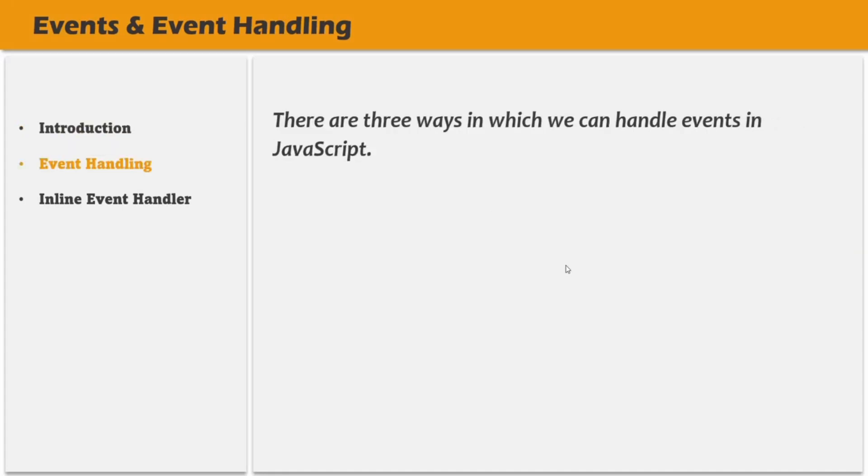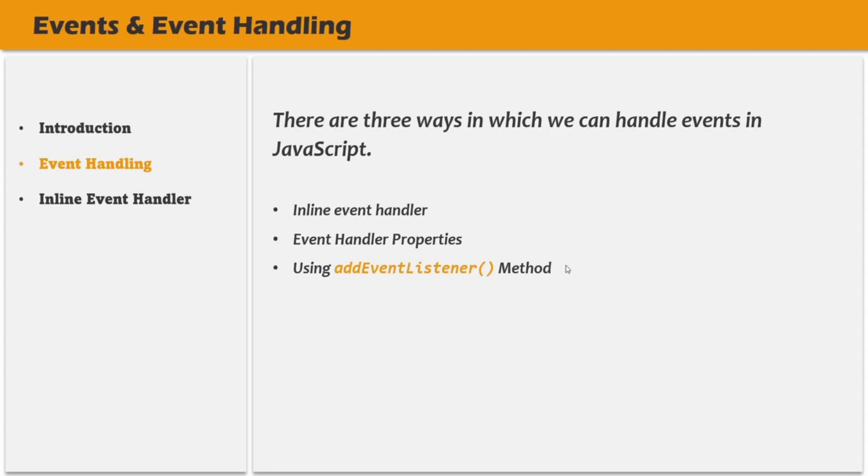Now there are three ways in which we can handle events in JavaScript. The first way is by using inline event handlers. Second, we can use event handler properties. And third, we have the addEventListener method, which listens for an event and executes some code when that event happens. In this lecture, we are going to talk about the inline event handler, and in the next lectures we will cover event handler properties and addEventListener.